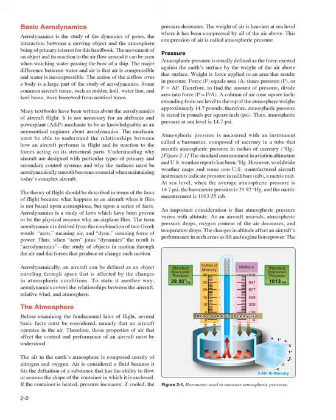Atmospheric pressure is measured with an instrument called a barometer, composed of mercury in a tube that records atmospheric pressure in inches of mercury (Hg). The standard measurement in aviation altimeters and U.S. weather reports has been Hg. However, worldwide weather maps and some non-U.S. manufactured aircraft instruments indicate pressure in millibars (MB), a metric unit. At sea level, when the average atmospheric pressure is 14.7 psi, the barometric pressure is 29.92 Hg, and the metric measurement is 1013.25 MB.